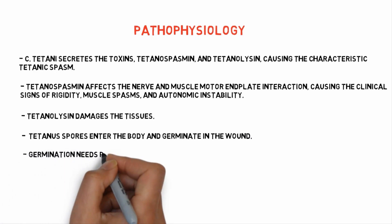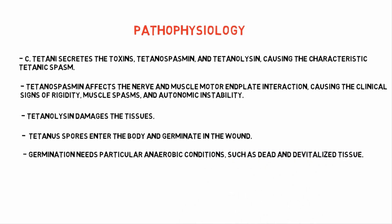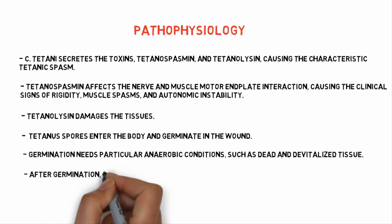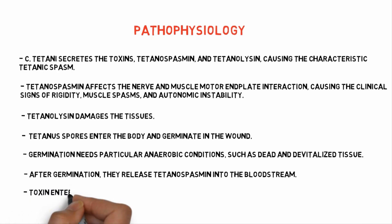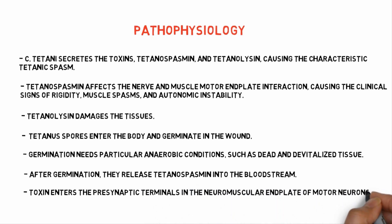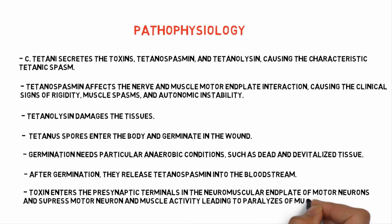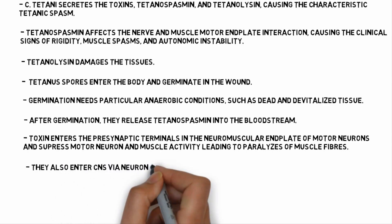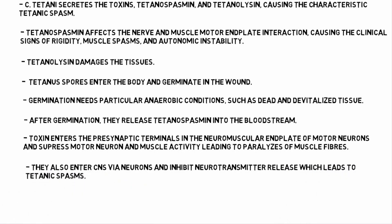Tetanolysin damages the surrounding tissue. Tetanus spores enter the body and germinate in the wound. Germination requires particular anaerobic conditions, such as dead and devitalized tissue. After germination, they release tetanospasmin into the bloodstream. This toxin enters the presynaptic terminals in the neuromuscular junction of motor neurons and suppresses muscle activity, leading to paralysis of muscle fibers. They also enter the CNS via neurons and inhibit neurotransmitter release, which leads to tetanic spasms.